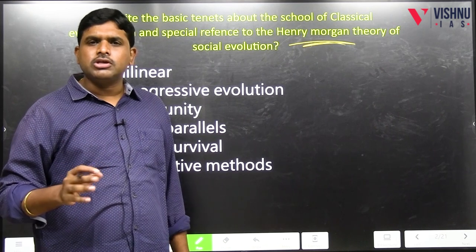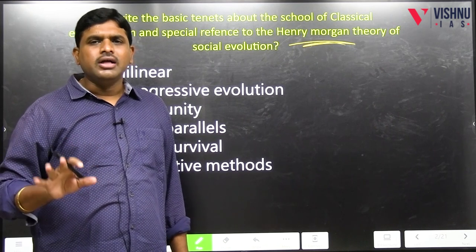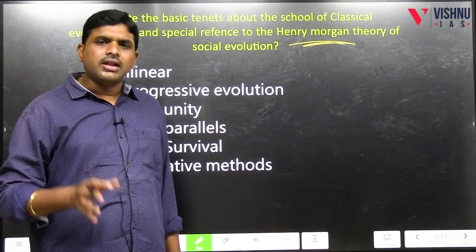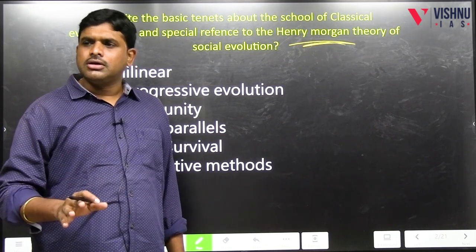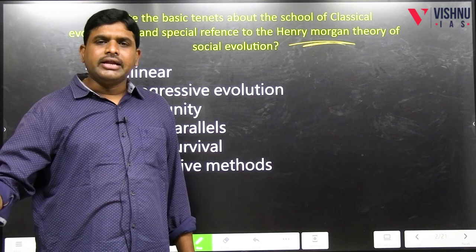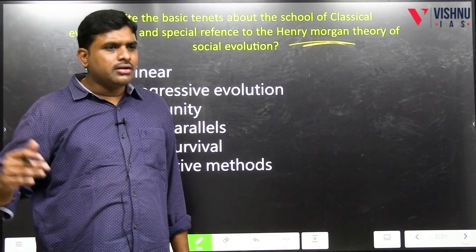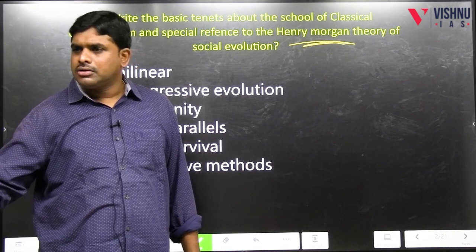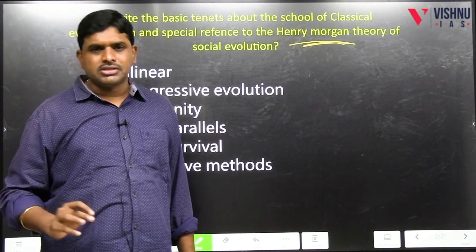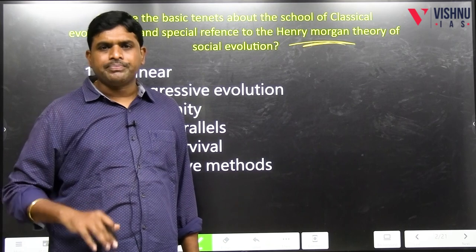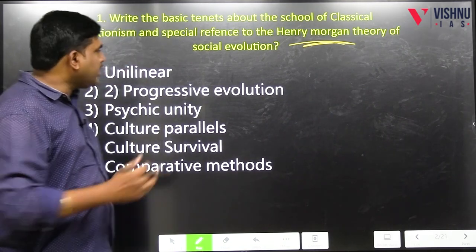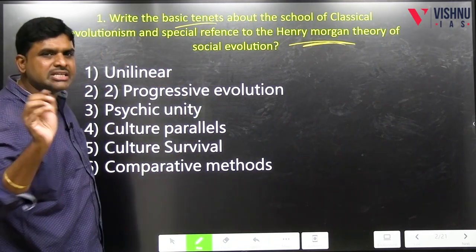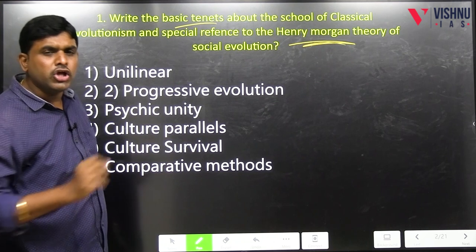There were three anthropologists related to Classical Evolutionism: British E.B. Taylor, American Henry Morgan, British James Frazer. Then we will come into the basic tenets — the next side heading will be directly 'Basic Tenets.'